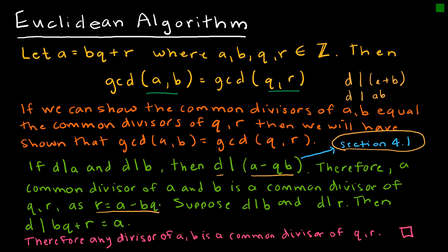So then we suppose, so this is sort of an if and only if statement, and remember if and only ifs, we have to go in each direction. So then we suppose that D divides B and D divides R, then we can say that D divides BQ plus R, which means it divides A, which means it divides B.